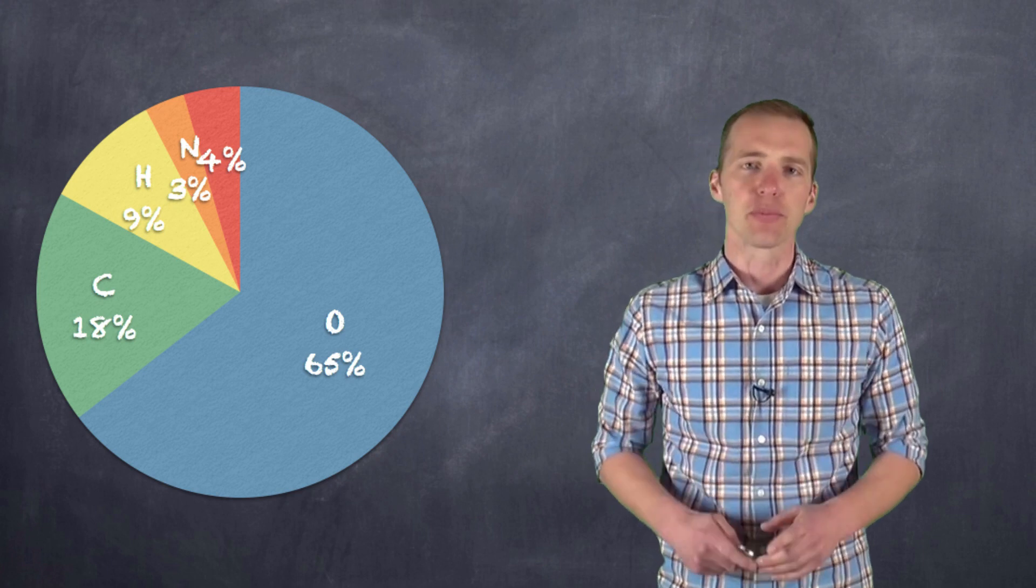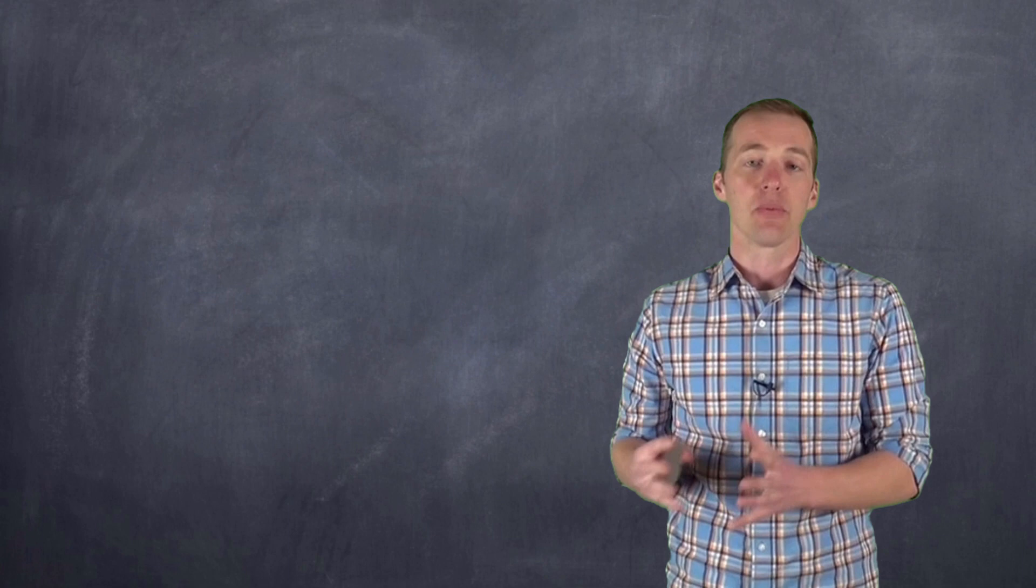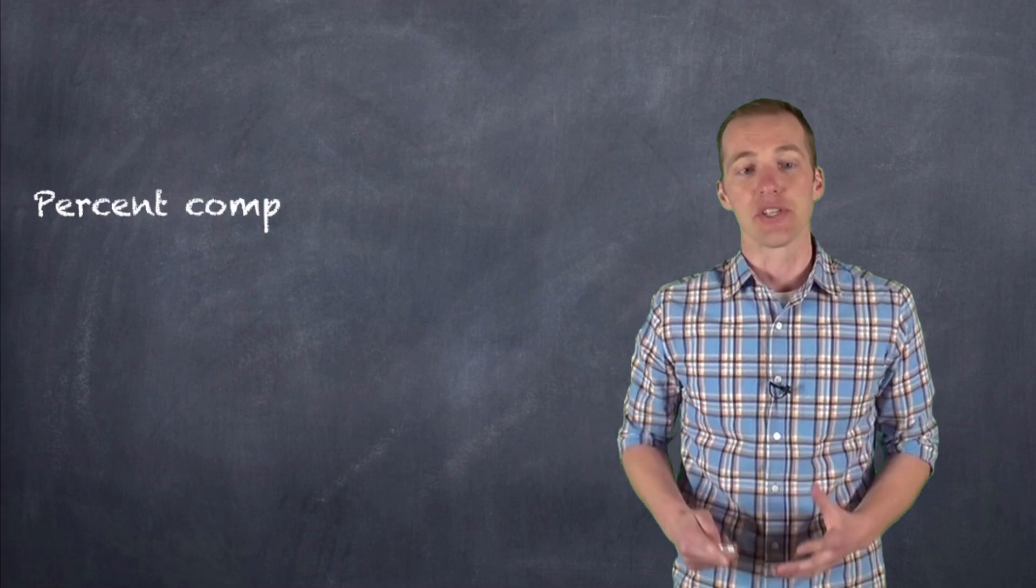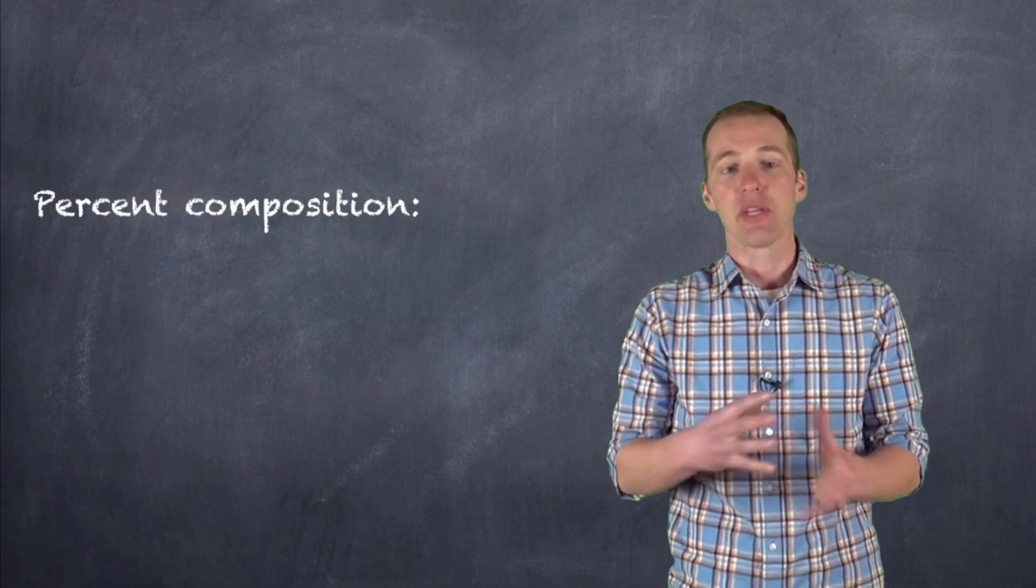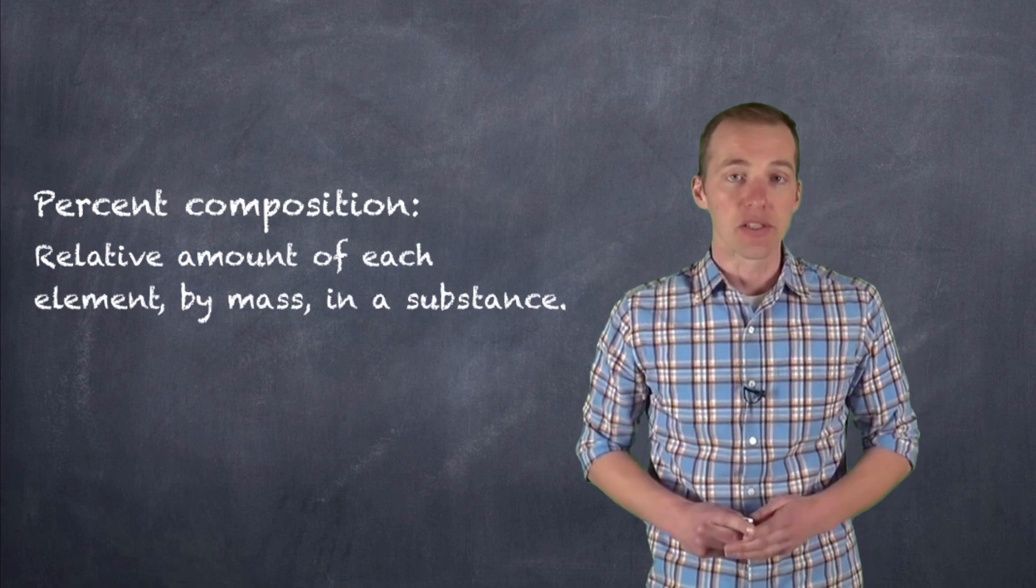Now, how do we figure out those percentages? Well, those percentages are through something that we call percent composition. And really what percent composition is, is a representation of the relative amounts of each element by mass in a particular substance.